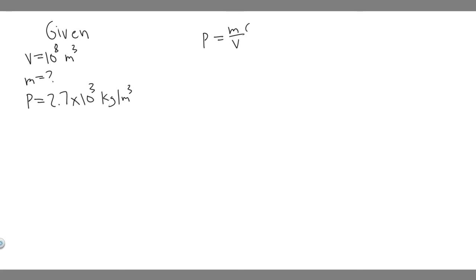If you multiply both sides by V, you get m equals the volume multiplied by the density. So all we have to do is plug it in.